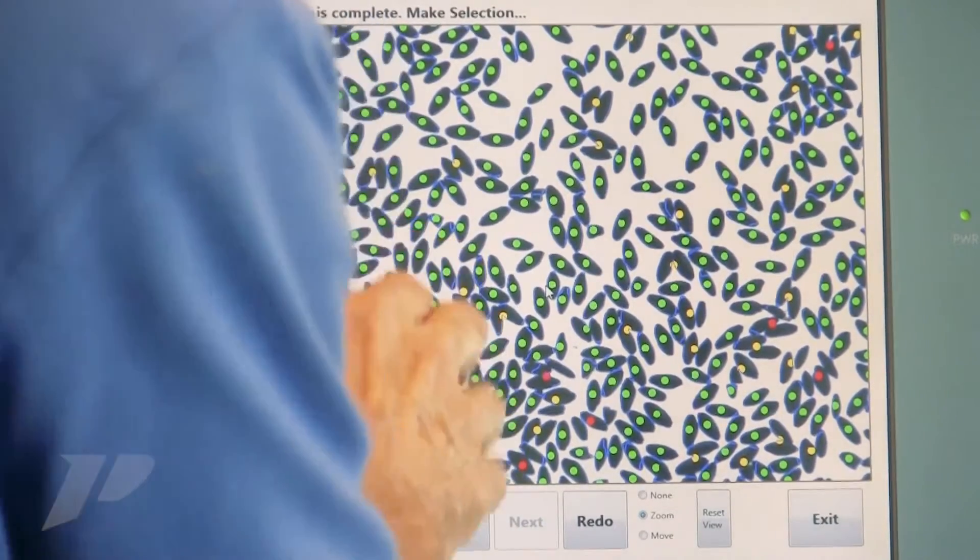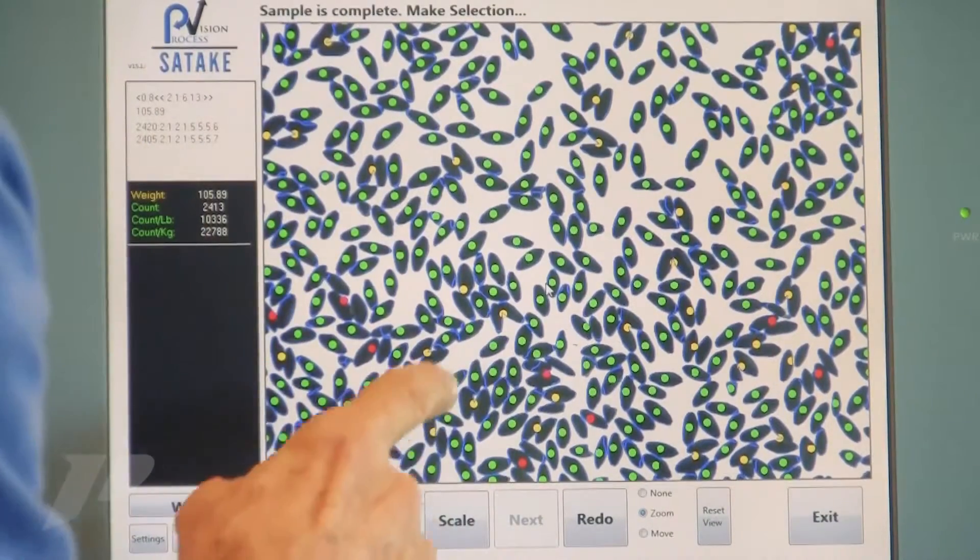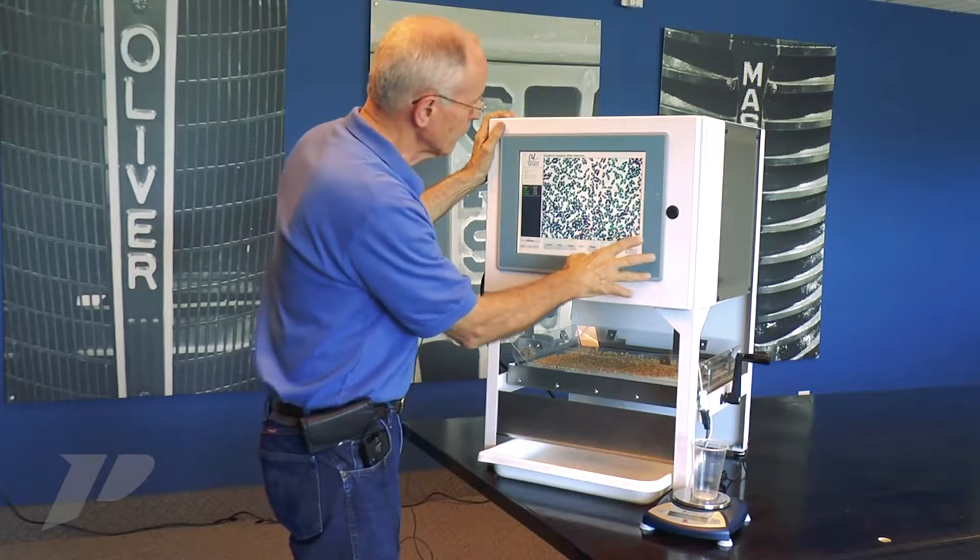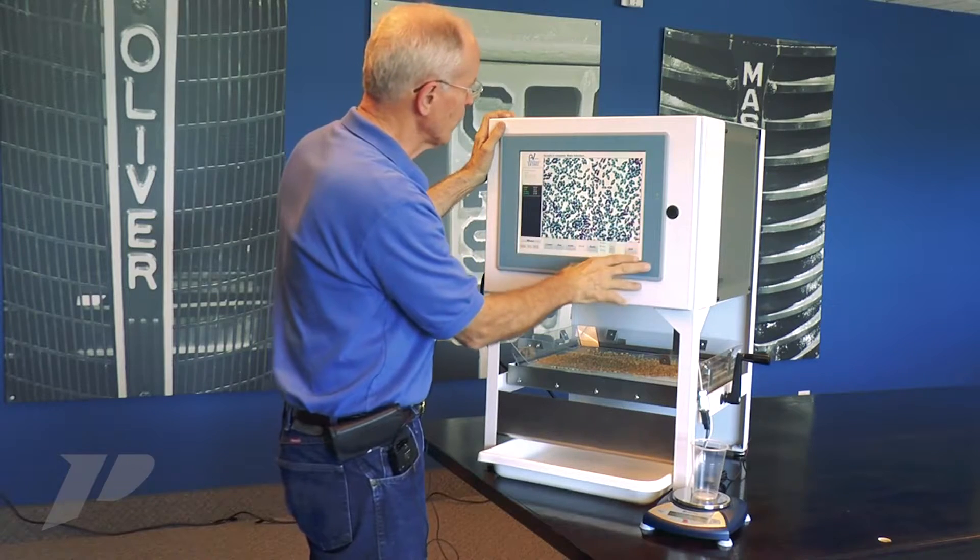You notice we put a green dot on the singles. We put a yellow dot on some that are doubles. We put a red dot on ones that we count for three. I'm looking for the counts to be correct.